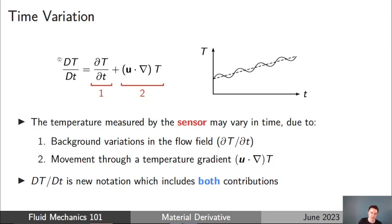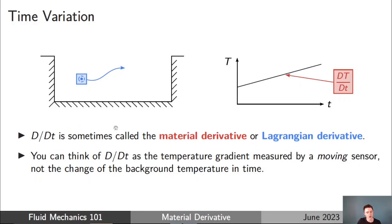To make absolutely clear the difference between the rate of change of temperature measured on the screen and the rate of change of the background flow itself, I've introduced new notation: capital DT by capital DT. This is new notation to capture both contributions. This new time derivative is sometimes called the material derivative or the Lagrangian derivative. The key way to think about it: it's the temperature gradient in time measured by a moving sensor — not the same as the change in the background temperature in time.